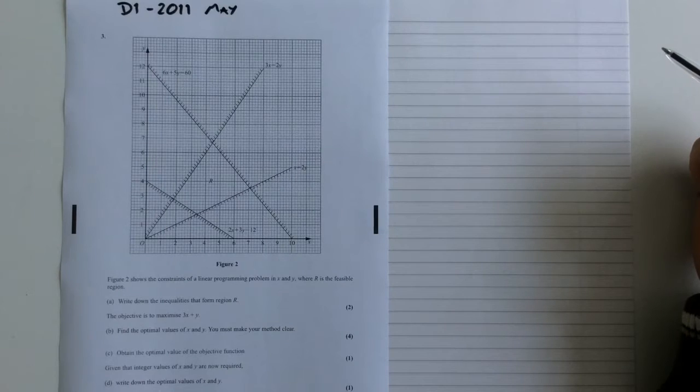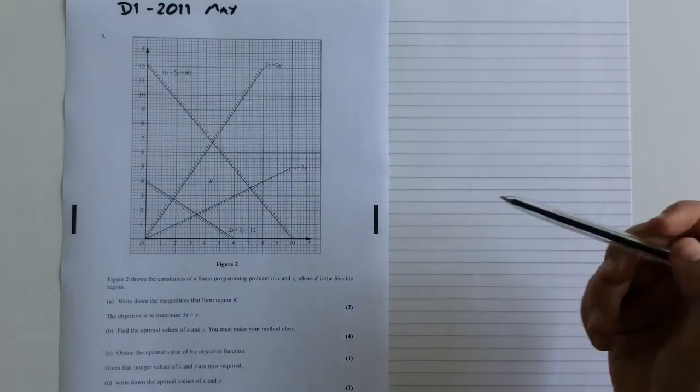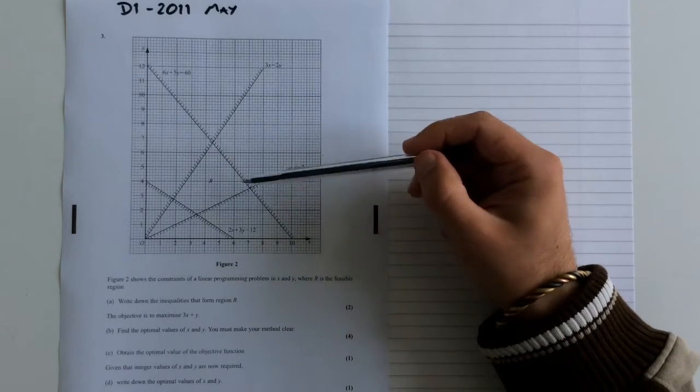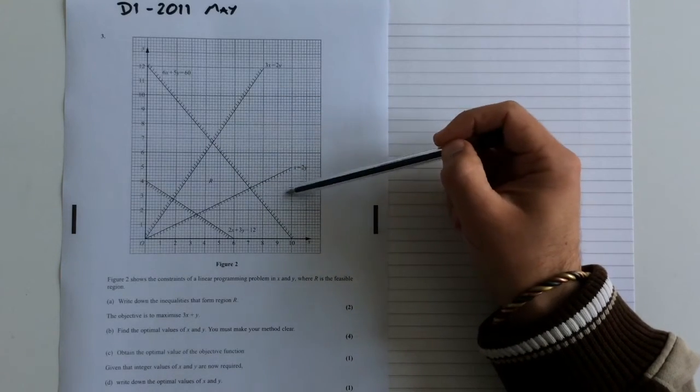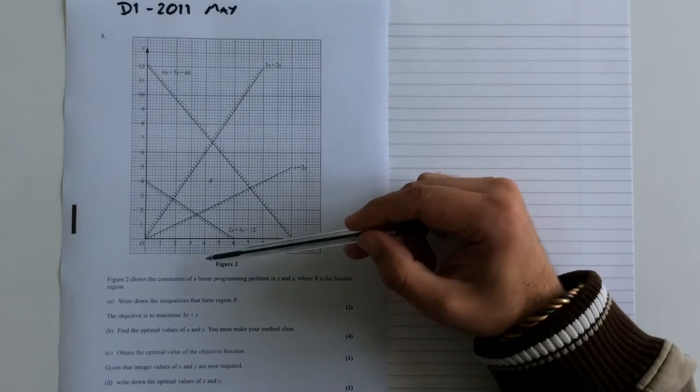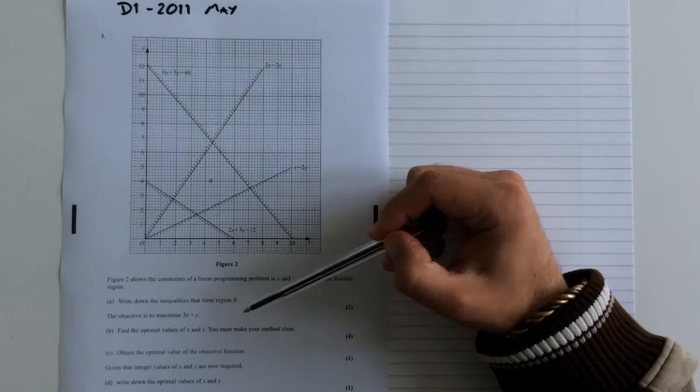This is a video demonstration on how to solve the linear programming question from the May 2011 Edexcel D1 paper. What we've got here is a graph and figure 2 shows the constraints of the linear programming problem. They've been shaded on one side of the line. R is the feasible region there. And we've got to write down the inequalities that form region R.